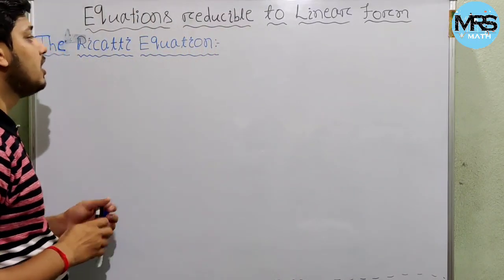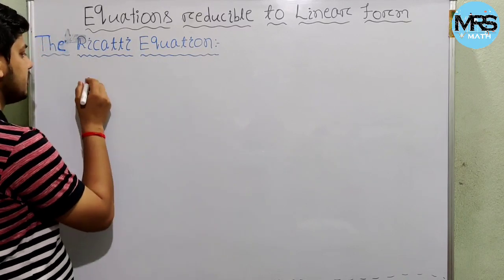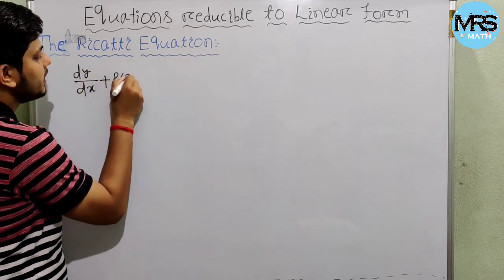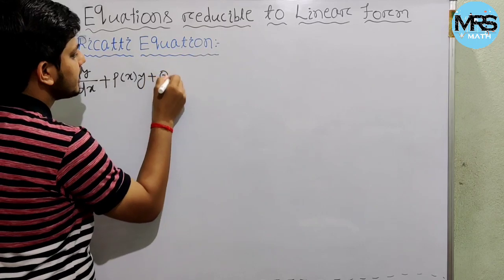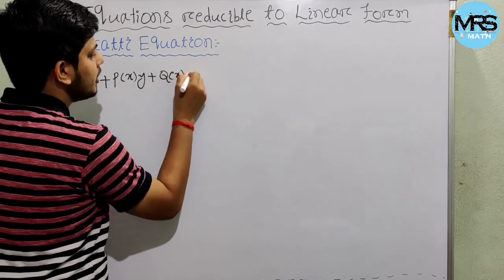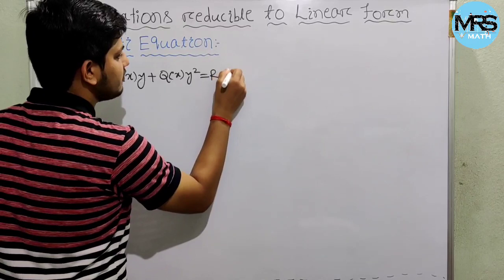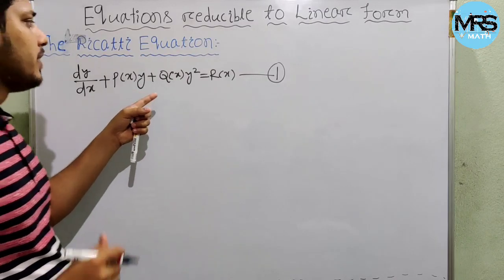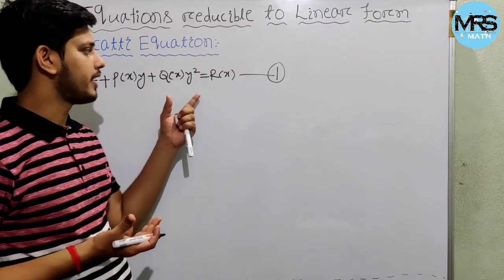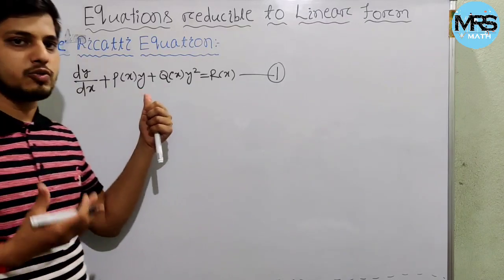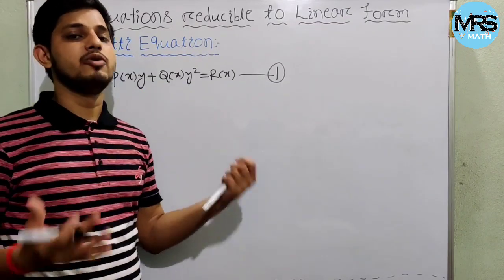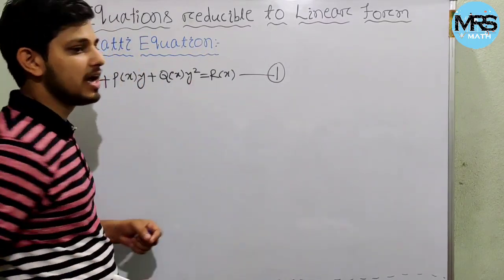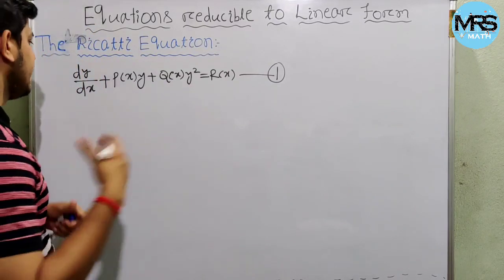Let us see the general form of the Riccati differential equation: dy/dx + p(x)y + q(x)y² = r(x). This is the Riccati differential equation, where p, q, and r are continuous functions of x.